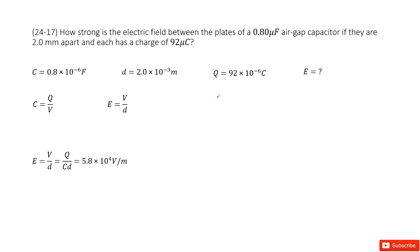We have a conductor, and the conductor's capacitance is given. We need to convert the unit from micro-F to F. Also, the distance of the air gap between the two planes is given, and the charge on the planes is given.